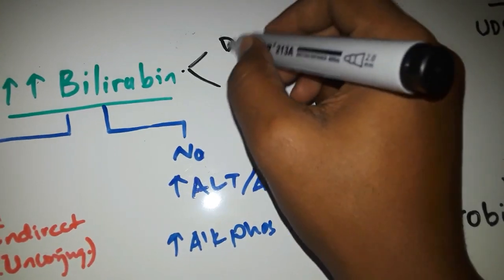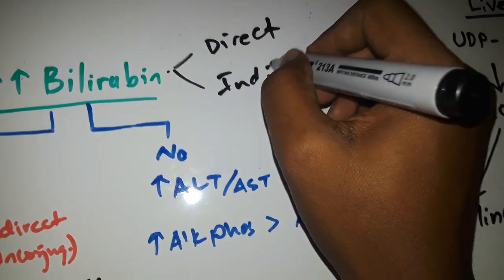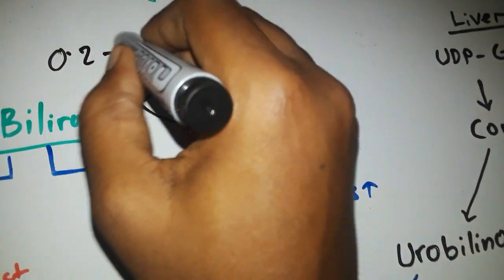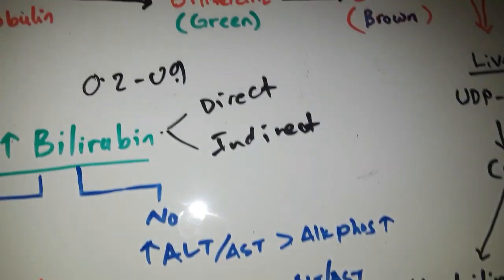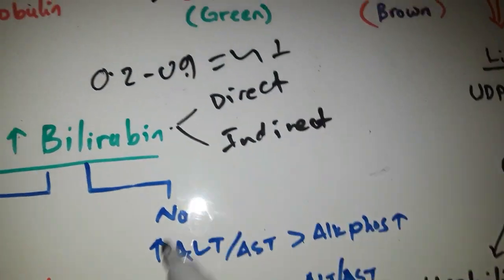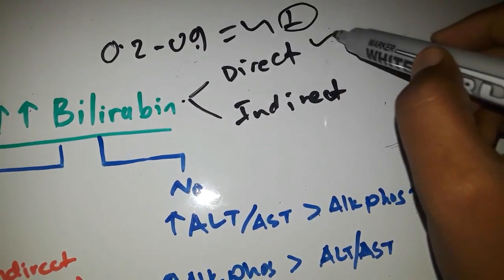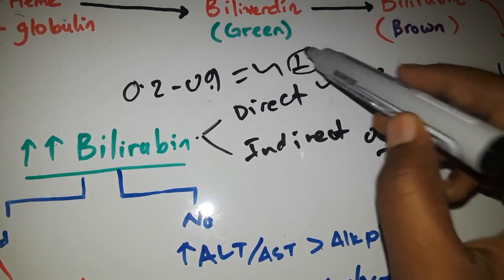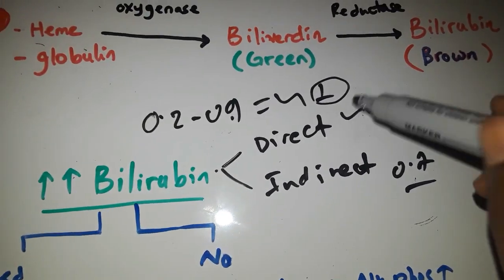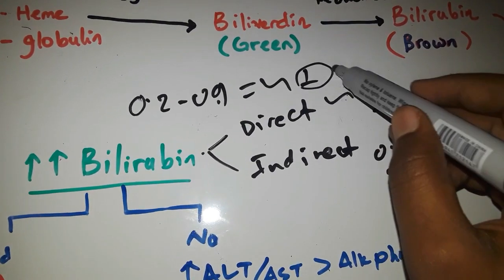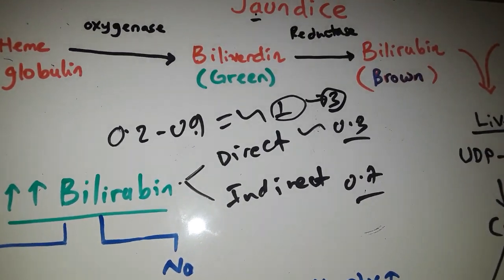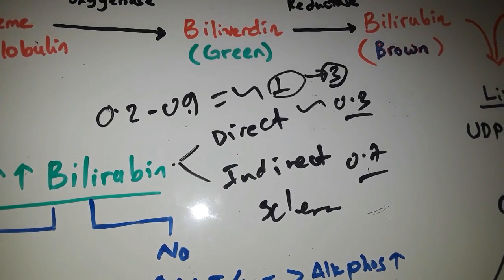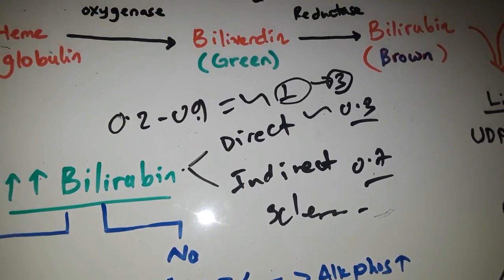Bilirubin can be direct or indirect — conjugated or unconjugated. Normally, adult bilirubin levels are 0.2 to 0.9. This is total bilirubin, consisting of direct and indirect components.